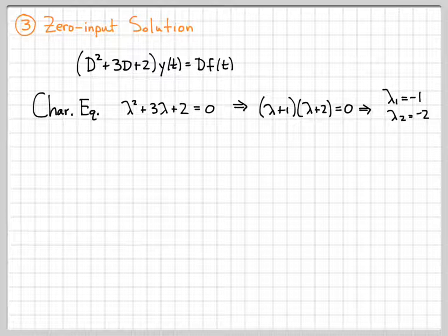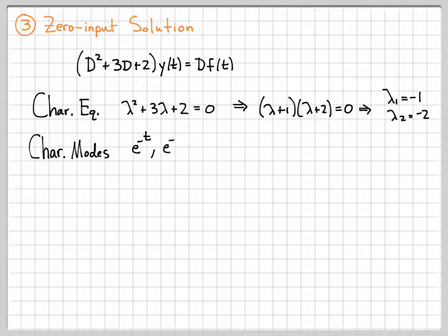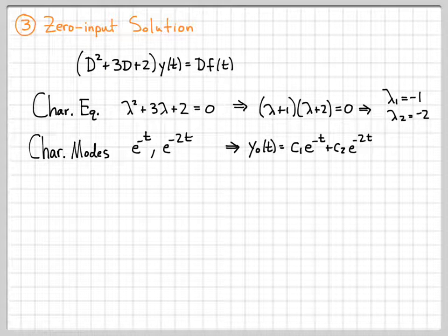So these are the characteristic roots of the system, which means my characteristic modes — since these are unique — are just a linear combination of e to the lambda t's. So my characteristic modes are e to the minus t and e to the minus two t. I can then form my zero input solution as a linear combination of those two terms.